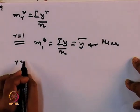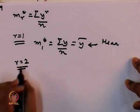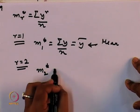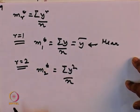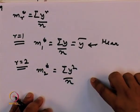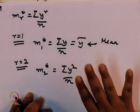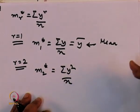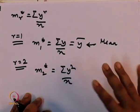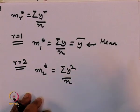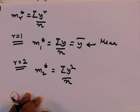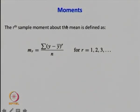For r equal to 2, m_2* about 0 is summation of y squared divided by n. The rth sample moment about the mean is defined as m_r equal to summation of (y minus y-bar) to the power r divided by n. So variance relates to the second moment about the mean.